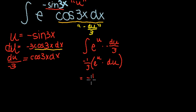So here we still have a u, so what we want to go ahead and do is just simply put in that negative sine of 3x in for that u once again.